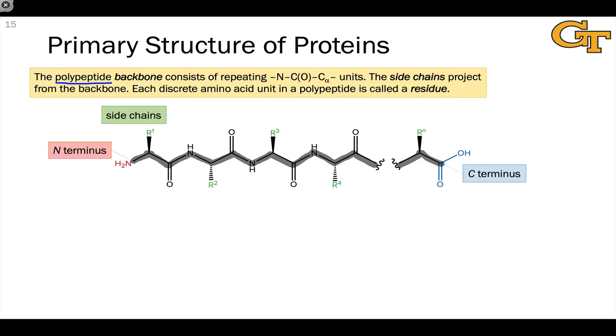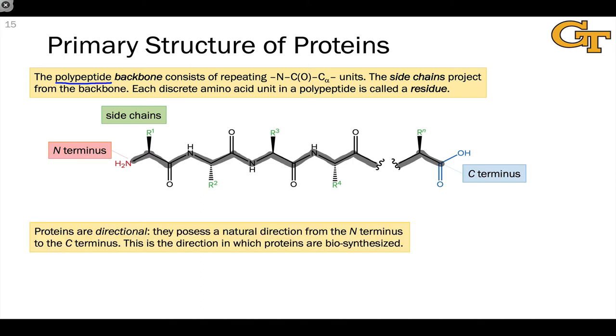One important lesson that this analysis teaches us is that proteins have an intrinsic sense of direction. They have a natural direction from the N-terminus to the C-terminus, and this is typically how we think about the directionality of proteins from N to C, the reason being that this is the direction in which they're biosynthesized in biochemical systems. From the N-terminus, this is the first peptide linkage made out to the C-terminus.